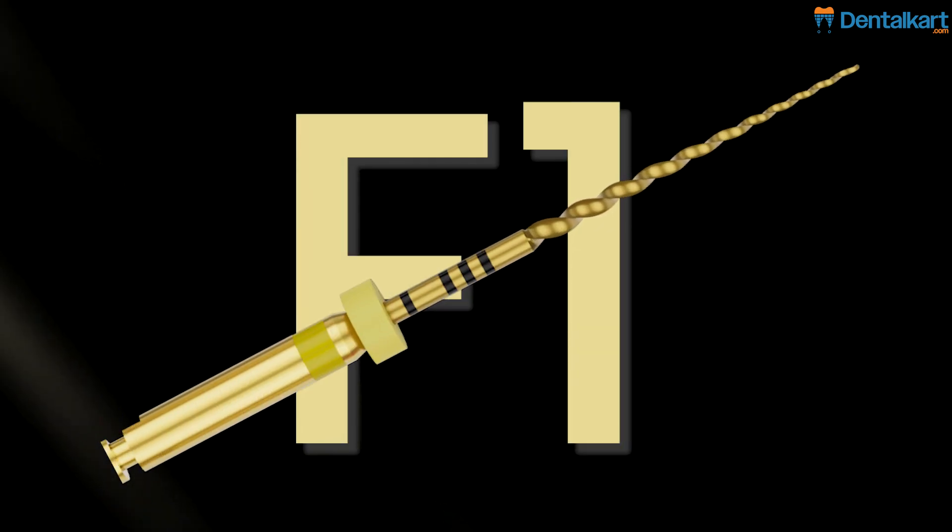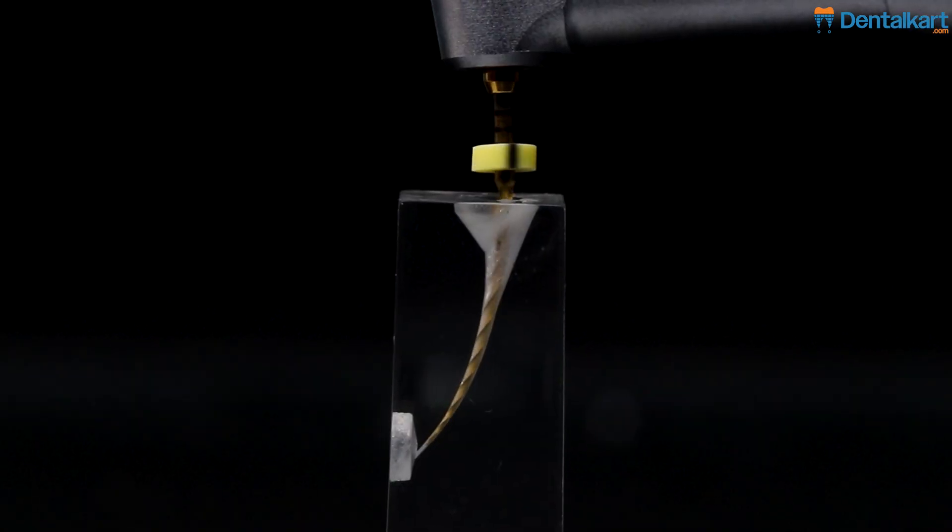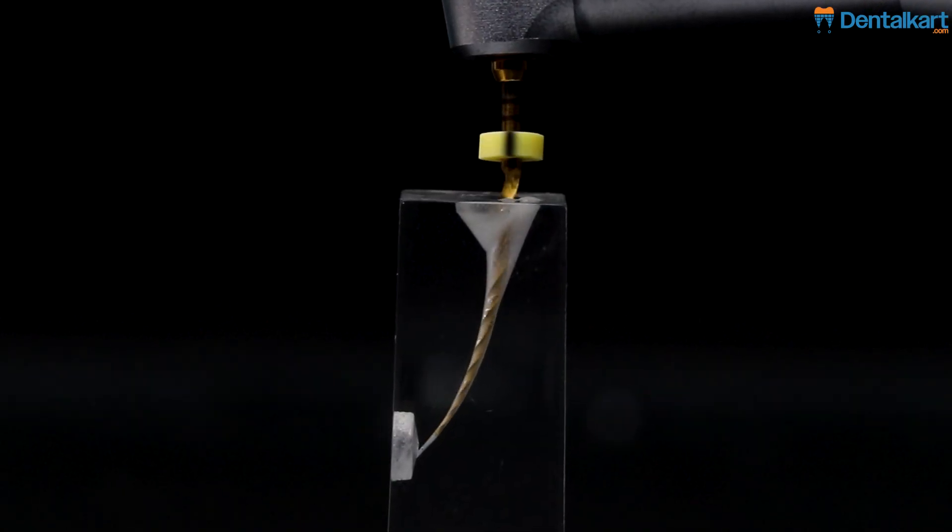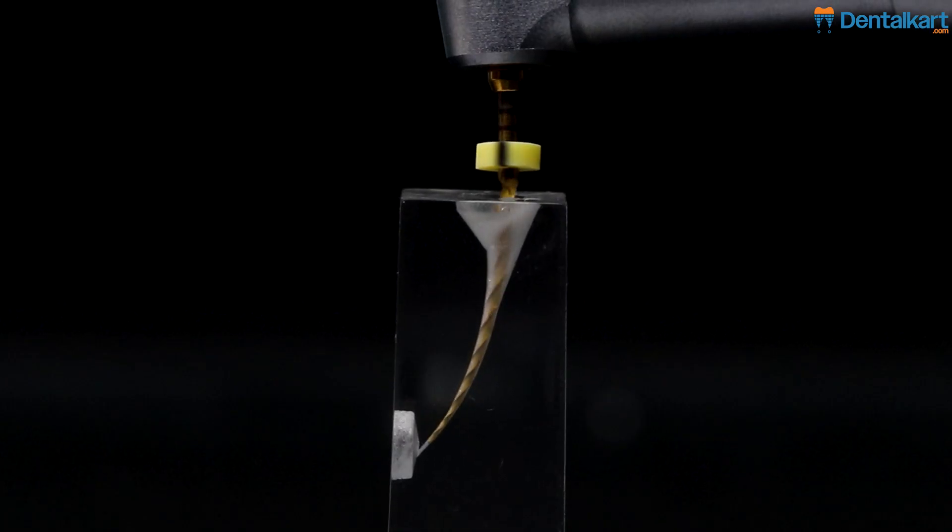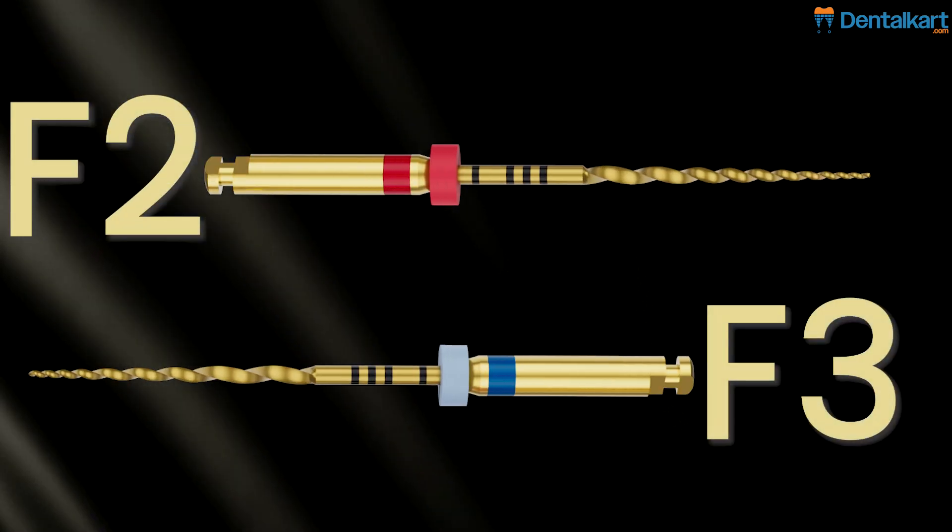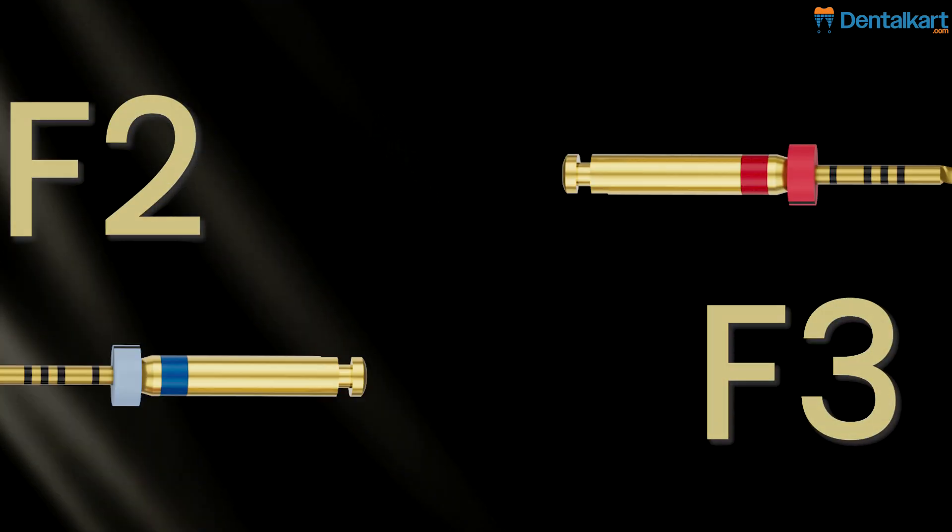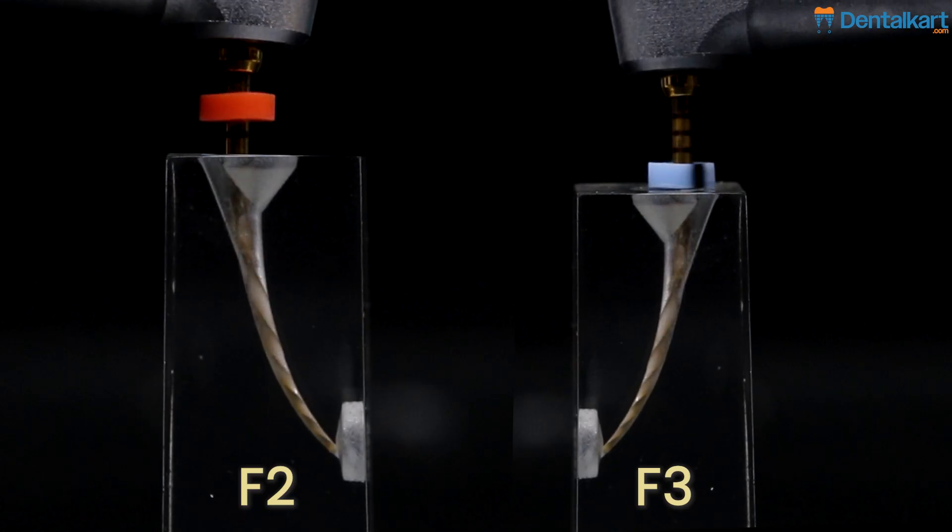Utilize the F1 file with non-brushing motion until reaching the working length to prepare the apical 1/3rd, avoiding prolonged contact. Progress to F2 and F3 files similarly using the same non-brushing technique to the working length.